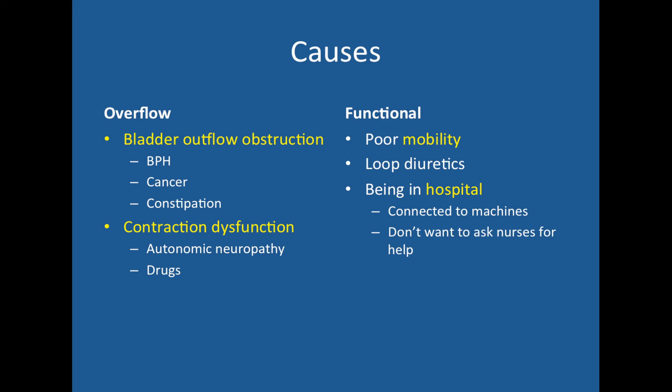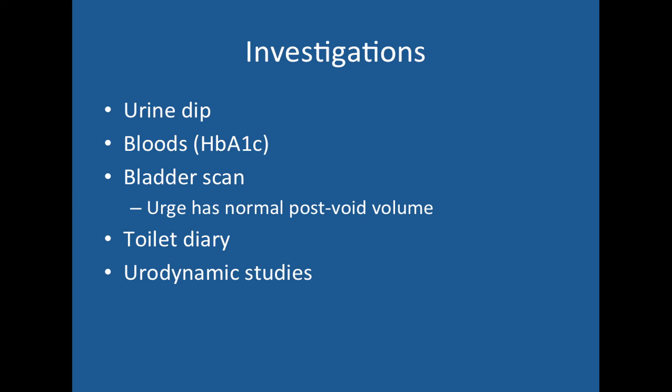Incontinence in hospital can cause moisture leading to pressure sores and infection. To investigate: do a urine dip to check for UTI, some bloods to check for diabetes, and a bladder scan — pre- and post-void — to assess post-void residual capacity, which is normal in urge incontinence but elevated in others. A toilet diary can identify triggers such as caffeine intake or times of stress. Urodynamic studies are available but probably a bit detailed for finals.